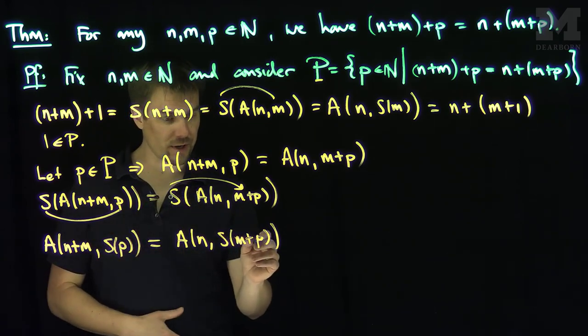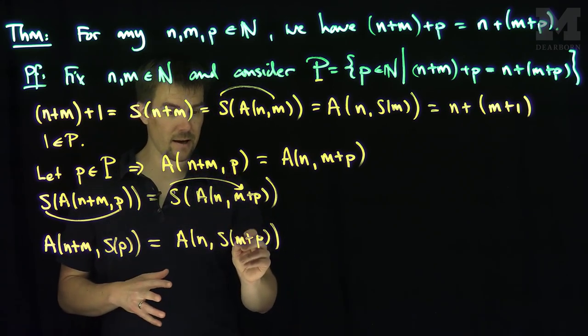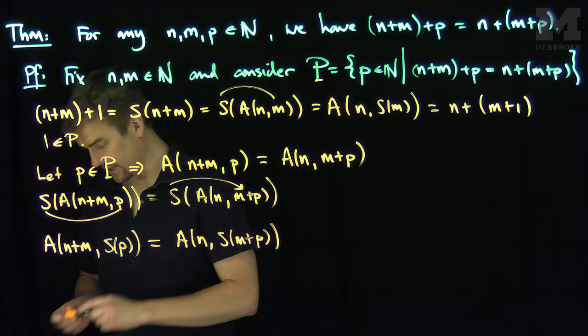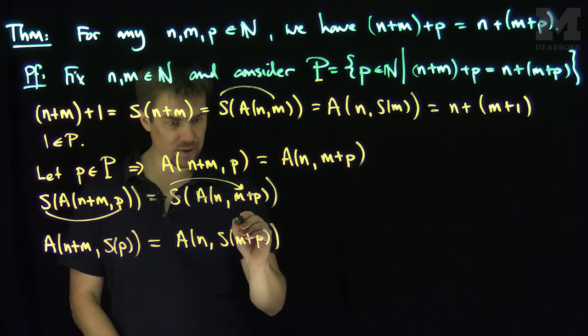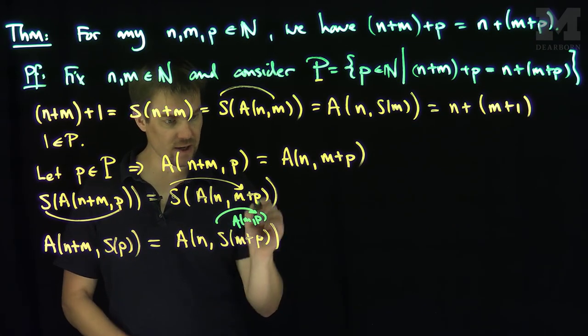Now what can I do with this successor over here? With this successor over here, we can put it on the p, right? Because I know this is really—this over here, I can also realize this is what? I can realize this m+p is really A(m,p). So we can put that successor onto the p.